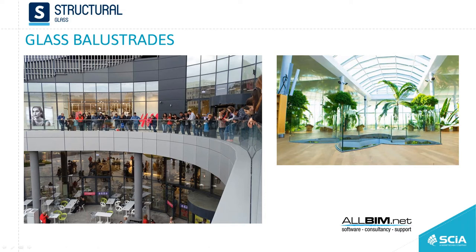This is a shopping mall in Romania with a glass balustrade positioned outside. When there's an event, people crowd and sit on this balustrade, putting a lot of pressure on it, so somebody has to calculate it. Sometimes engineers are blocked — they know how to design the concrete columns and steel parts — but they can get blocked with this kind of thing and the project can be delayed.